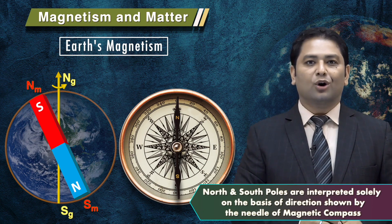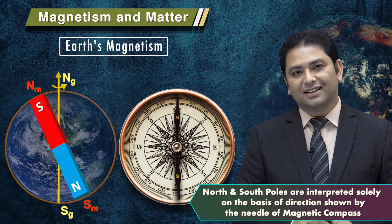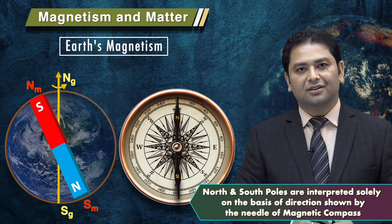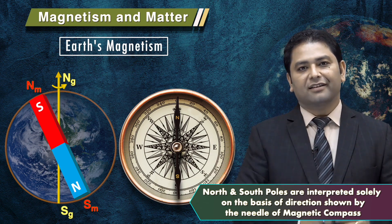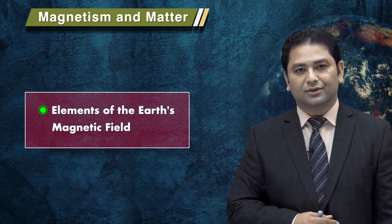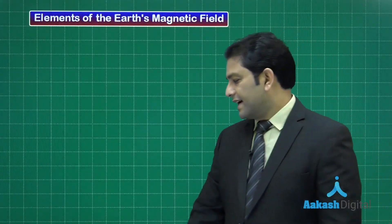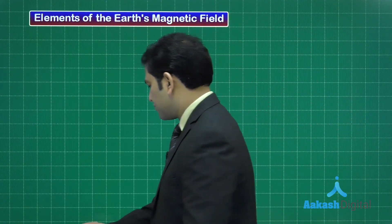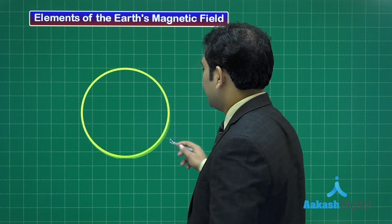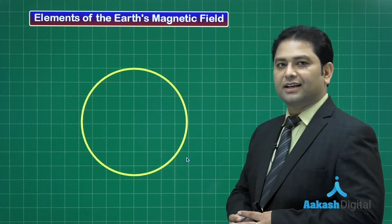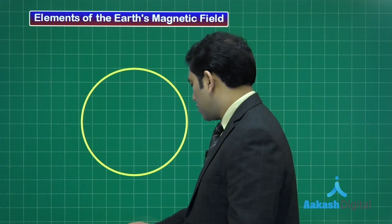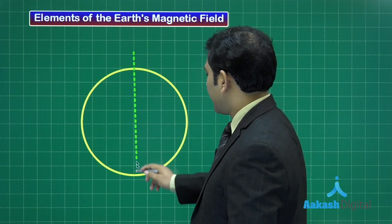We interpret north and south solely based on the direction shown by the compass. Wherever the compass's north pole points, we call that the north — but Earth's huge imaginary south pole is actually present at that point. Now let's dig deeper. Here is the Earth treated as a nice round sphere. We have two meridians: one is the geographical meridian and the other is the magnetic meridian.